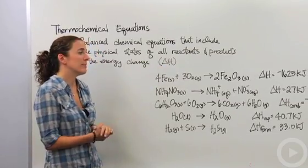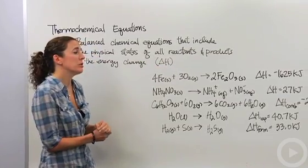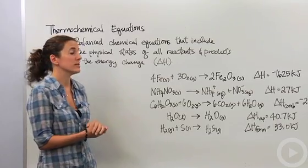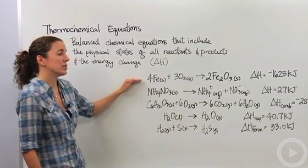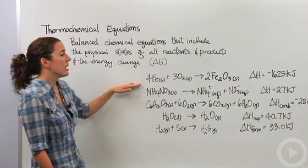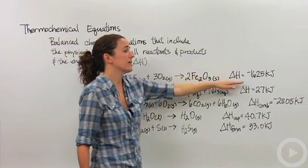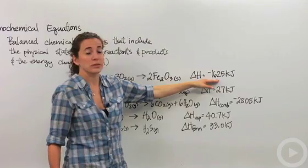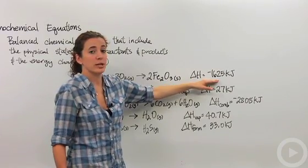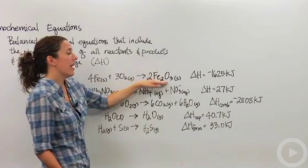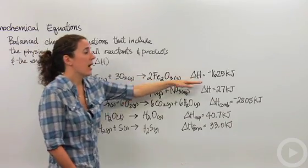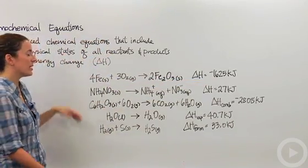I have on the board several different types of reactions, and I've also included their enthalpy changes or energy changes. We have our first reaction, which is just a simple combination reaction, synthesis reaction, and notice that the delta H is negative 1625 kilojoules, meaning that's releasing that much energy into the atmosphere. So when these two guys combine and form our rust, we're releasing 1625 kilojoules of heat.